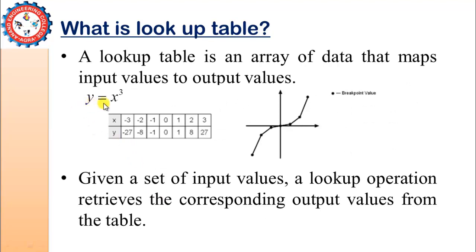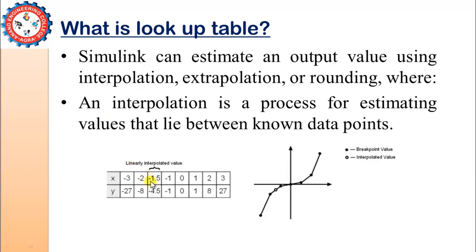Since we have the relation y = x³, the cube of -1.5 is -3.375, but we are getting approximately -4.5 — so we are not getting the exact value because we are taking an estimation. The accuracy of the output data depends on which interpolation method you are using. In Simulink we have multiple options for interpolation as well as extrapolation. These interpolated values are shown on the graph alongside the breakpoints.